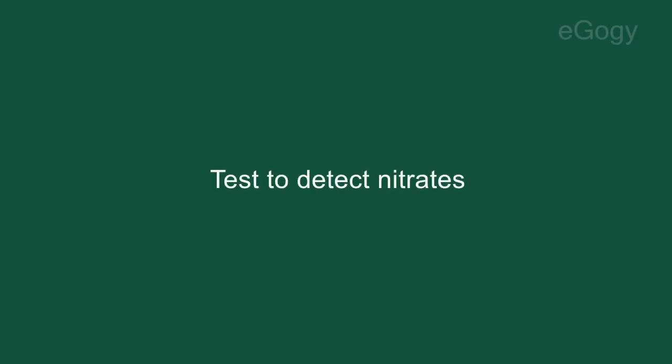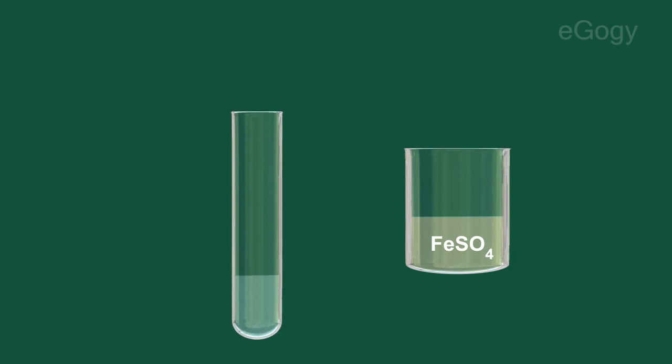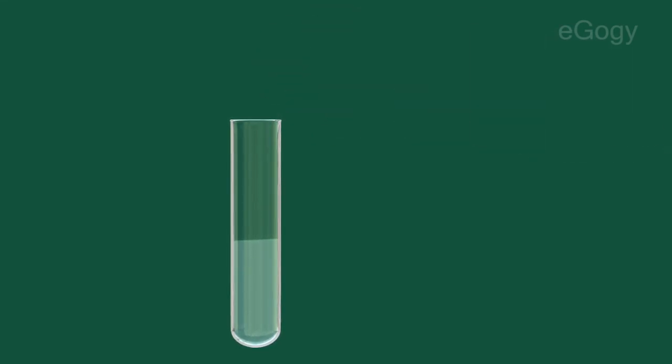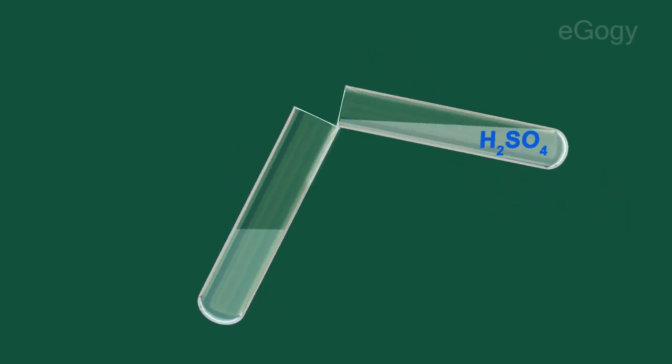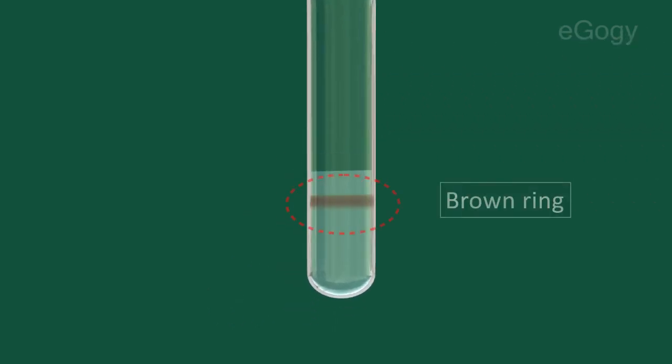Test to detect nitrates. Take a small quantity of aqueous solution of nitrate in a test tube. Add an equal volume of freshly prepared ferrous sulfate solution to it. Shake well. Then pour concentrated sulfuric acid through the sides of the test tube slowly without shaking it. Formation of a brown ring at the junction where the two solutions meet indicates the presence of nitrate.